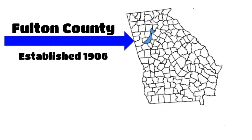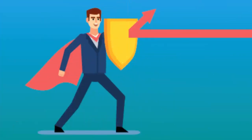Fulton County was the first county in Georgia to establish a juvenile court system. Today, every county in Georgia has a juvenile court. The purpose of the juvenile courts is to protect, not punish, juveniles.